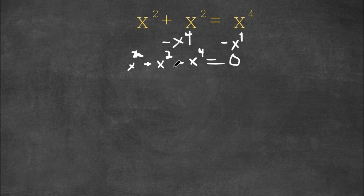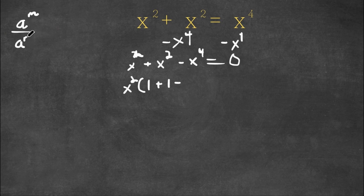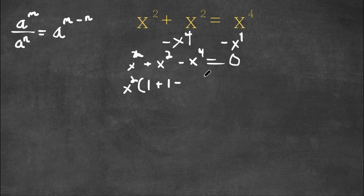Now what I'm going to do is I'm going to factor out the greatest common factor of all these terms, which is actually x squared. So now we have x squared times: x squared divided by x squared is 1, plus x squared divided by x squared is 1, minus x to the power of 4 divided by x squared. If we have something in the form a to the power of m over a to the power of n, this is equal to a to the power of m minus n. So x to the power of 4 over x to the power of 2 is x to the power of 4 minus 2, and 4 minus 2 is 2, so this would be x squared. And this is equal to 0.